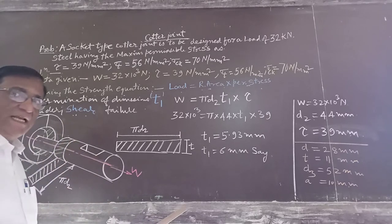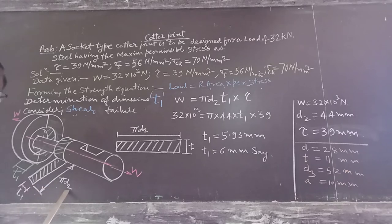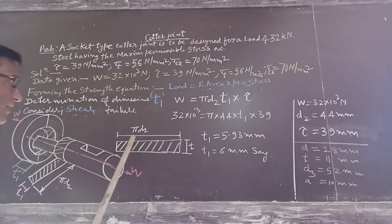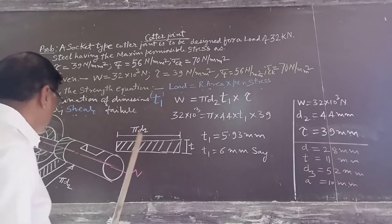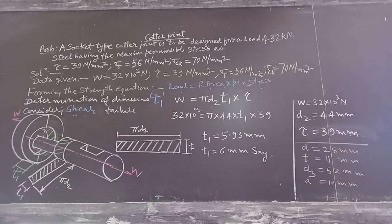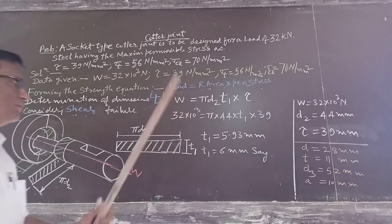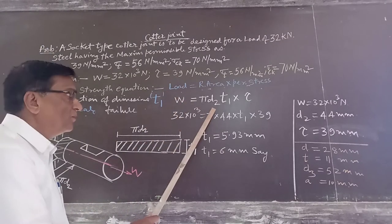Now we will calculate the shear area. The shear area is developed as pi times D2, and the shear area is given by pi D2 into T1. This is the resisting area. We will now form the strength equation: the resisting area is pi D2 into T1.